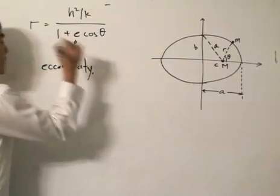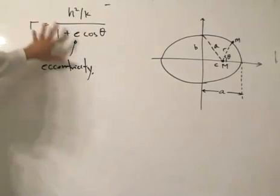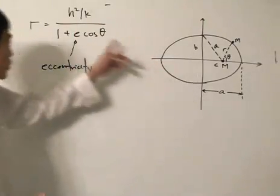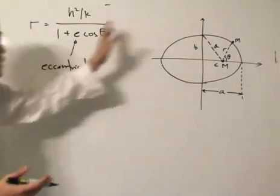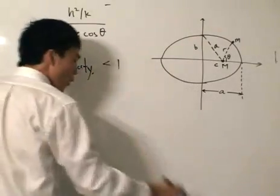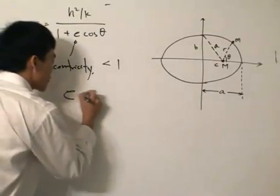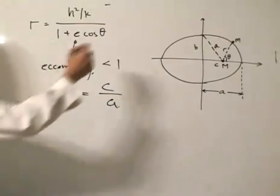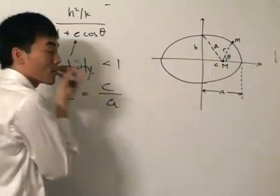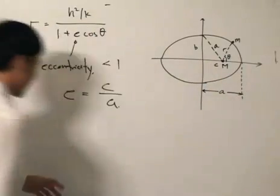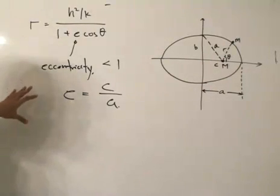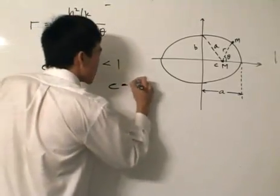The term e is called the eccentricity, and it describes the orbit. We certainly know there's an elliptical orbit because the eccentricity is less than one. We also know that the eccentricity e is equal to c divided by a. C is the distance from the center to the mass m, which is the sun, and a is the semi-major axis. Bear in mind that e = c/a.